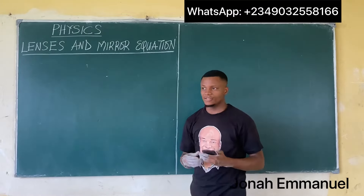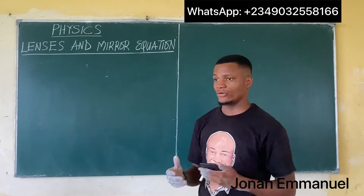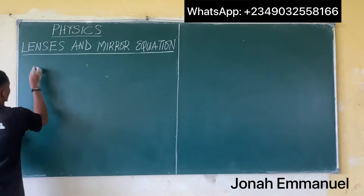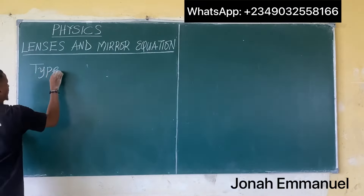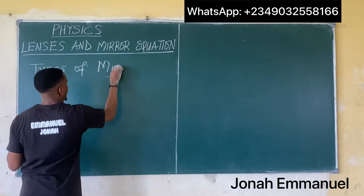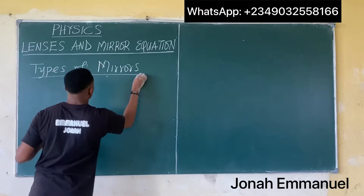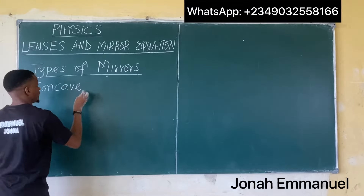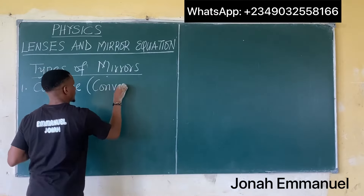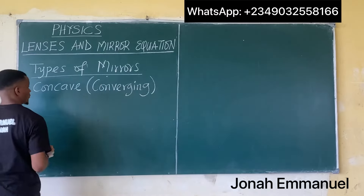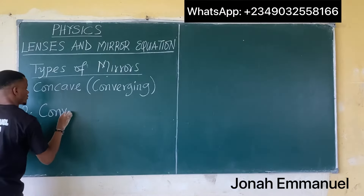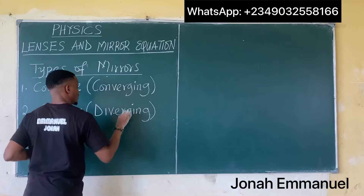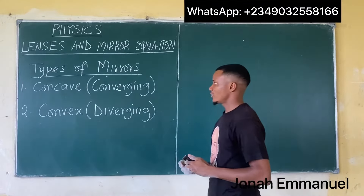With that being said, we use the terms lenses and mirrors interchangeably. So let's look at the types of lenses or mirrors. The first type is called the concave, or converging mirror. The second one is called the convex, or diverging mirror.